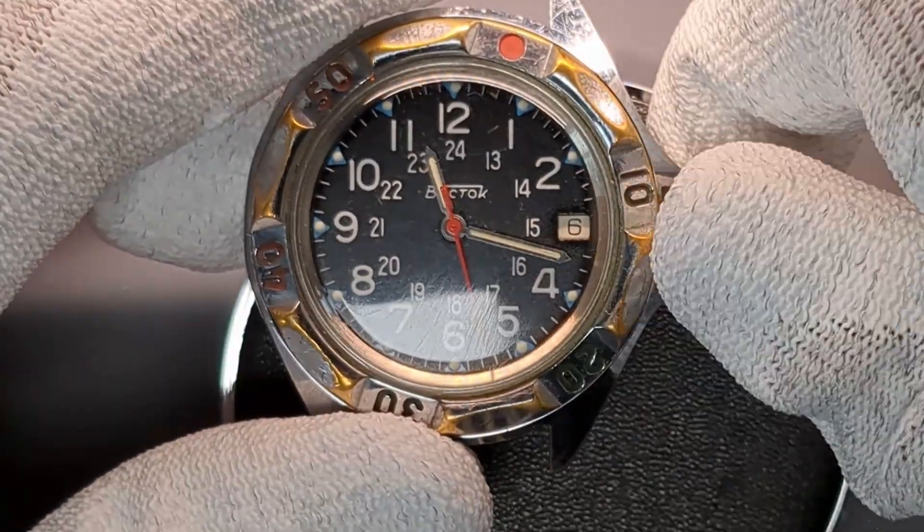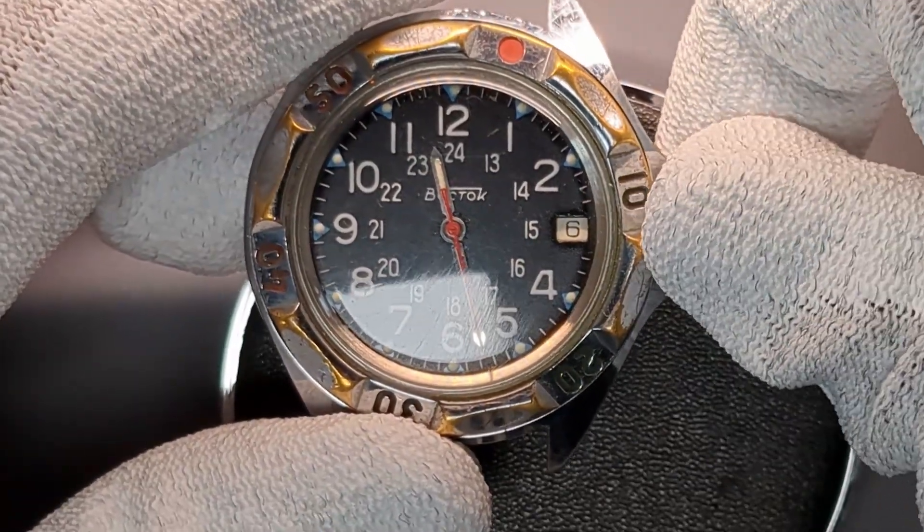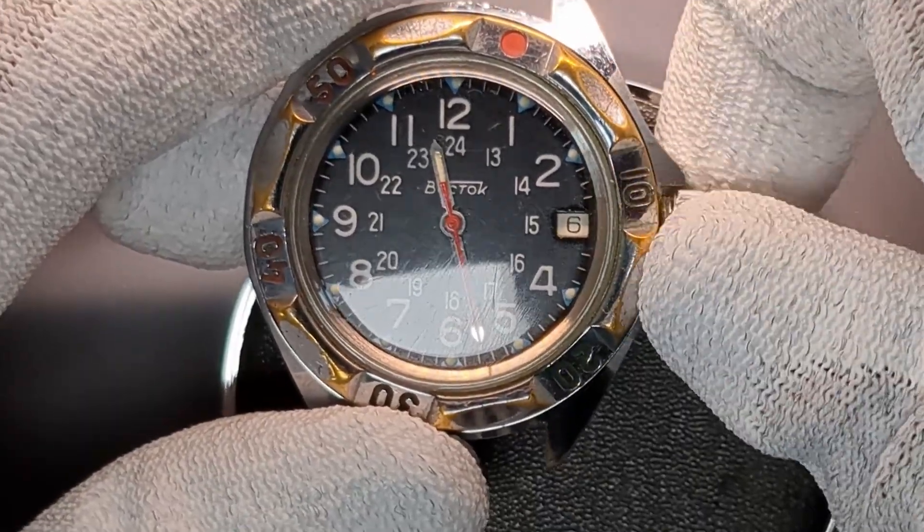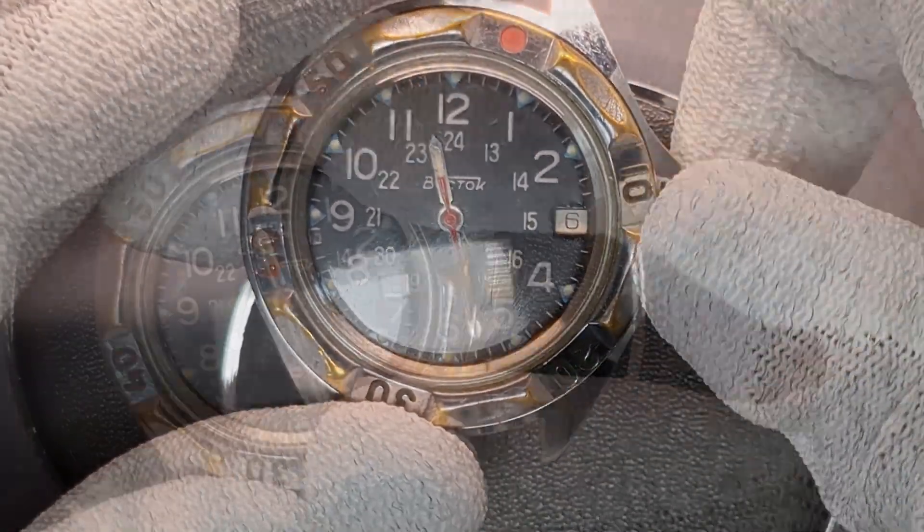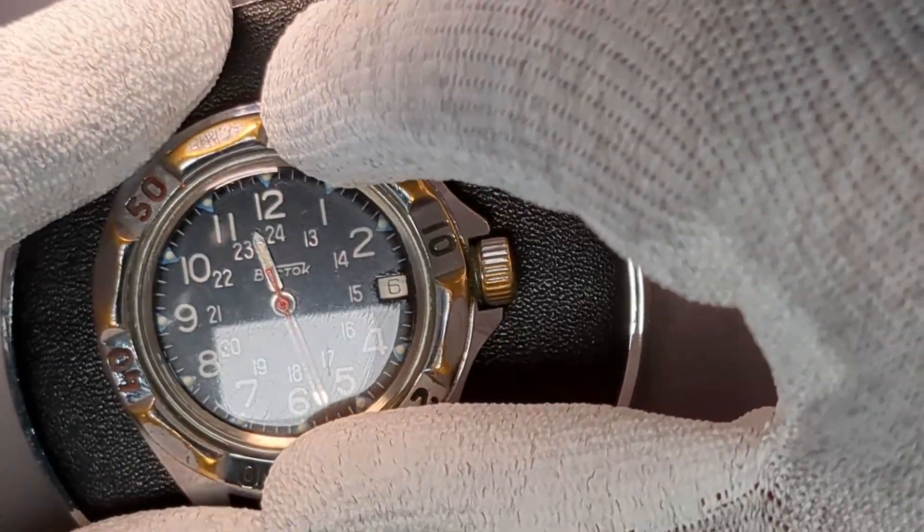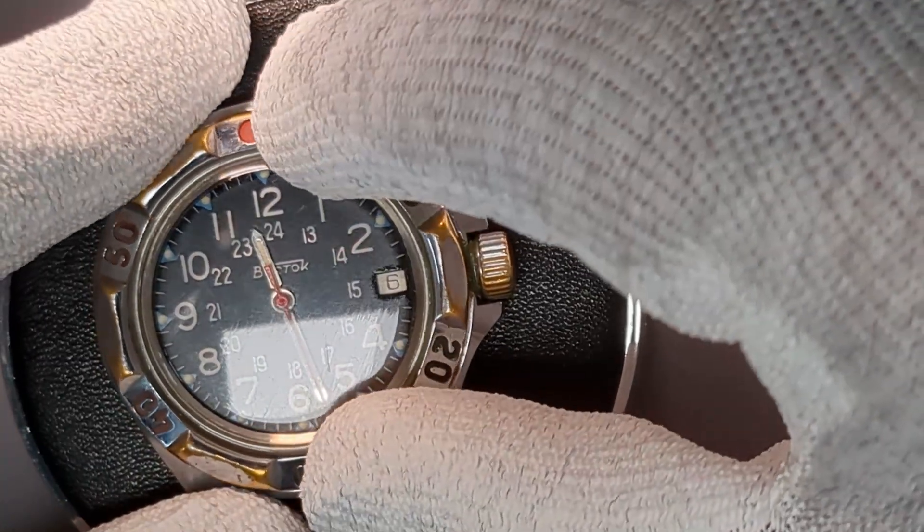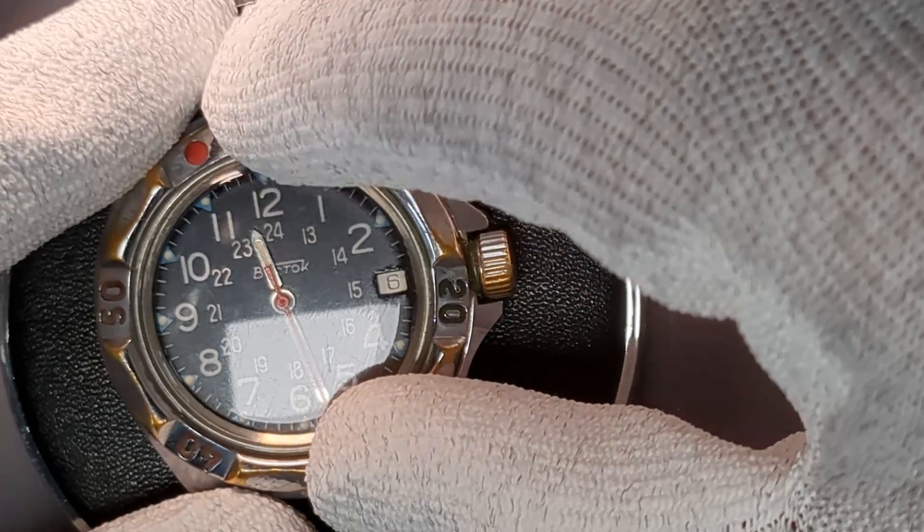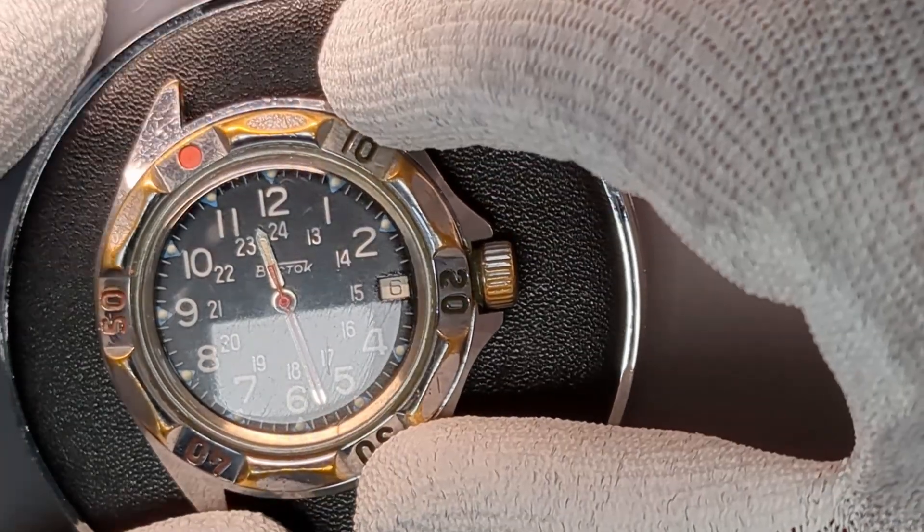The Vostok Amphibia has a fascinating history. It was first developed in the late 1960s for the Soviet Navy as a military style diver's watch. It is tough, reliable and capable to reach 200 meters of depth even with that simple technology.